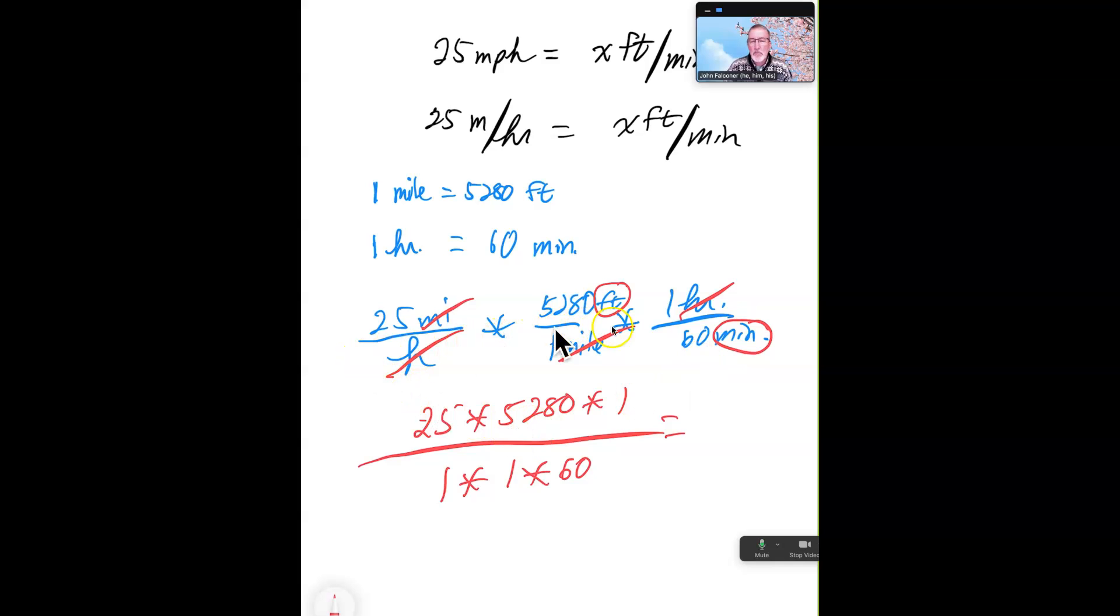And so as we multiply these through, miles and miles cancel each other out. Numerator, denominator, hours and hours cancel each other out. And that leaves intact our feet and minutes.